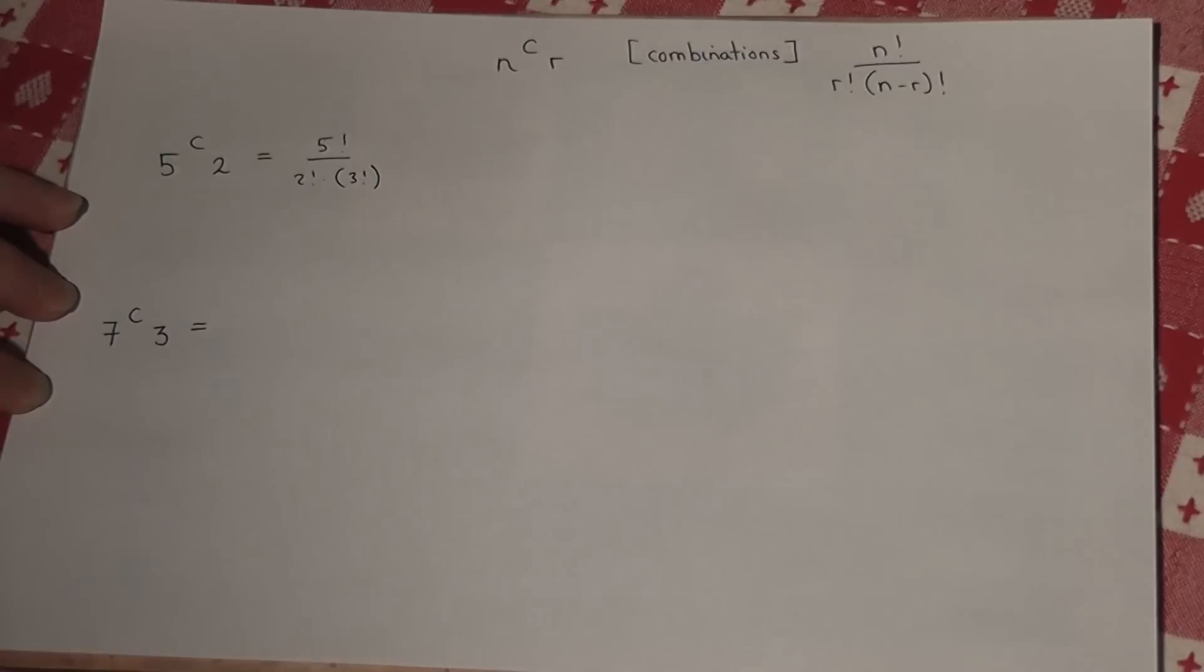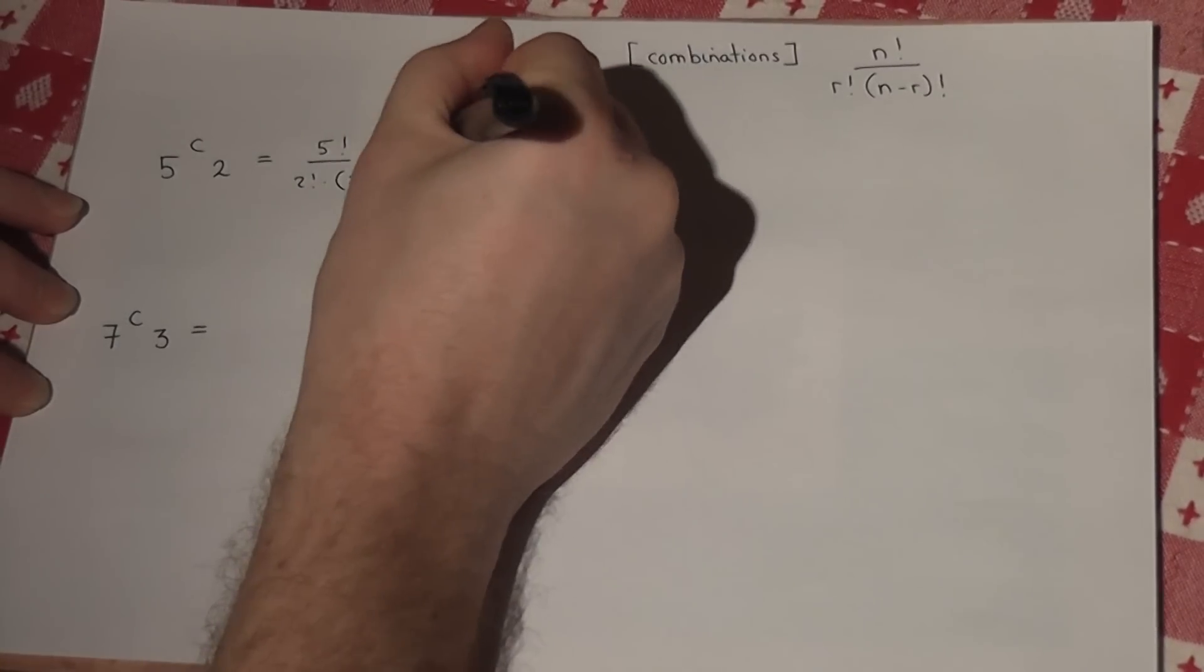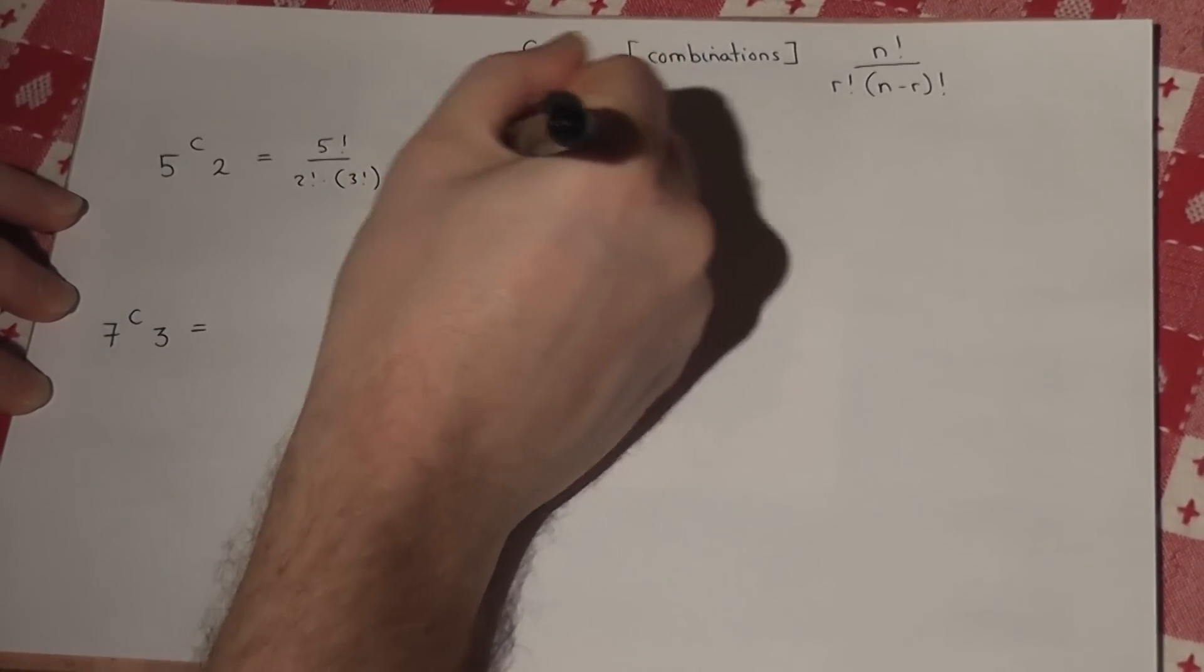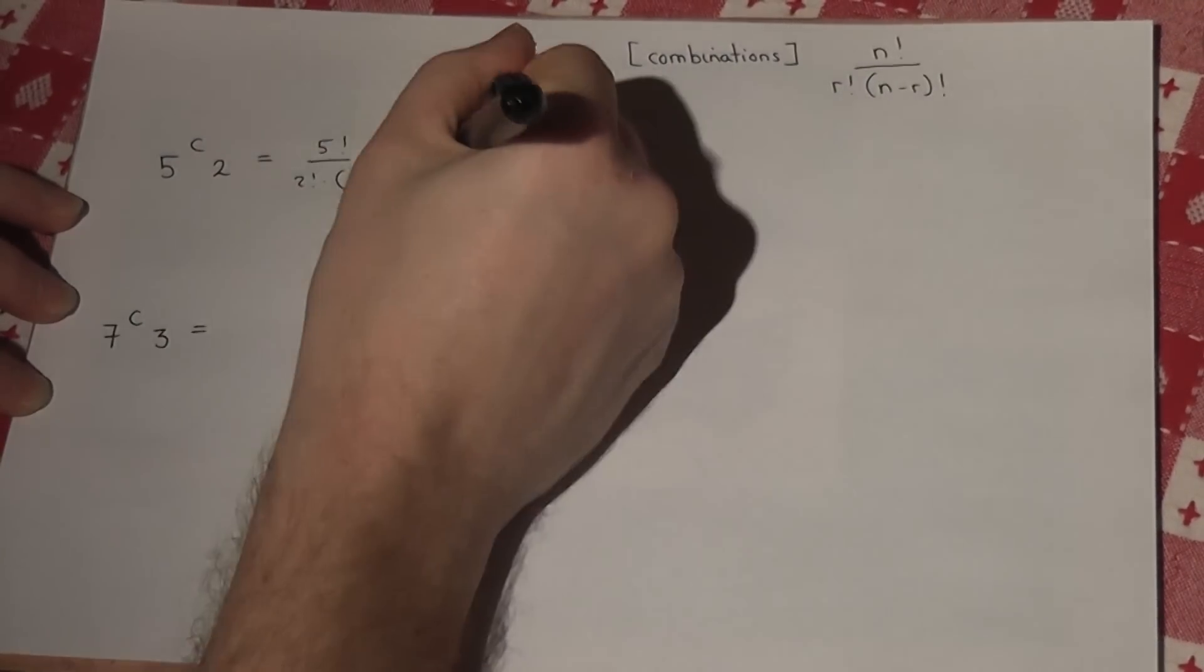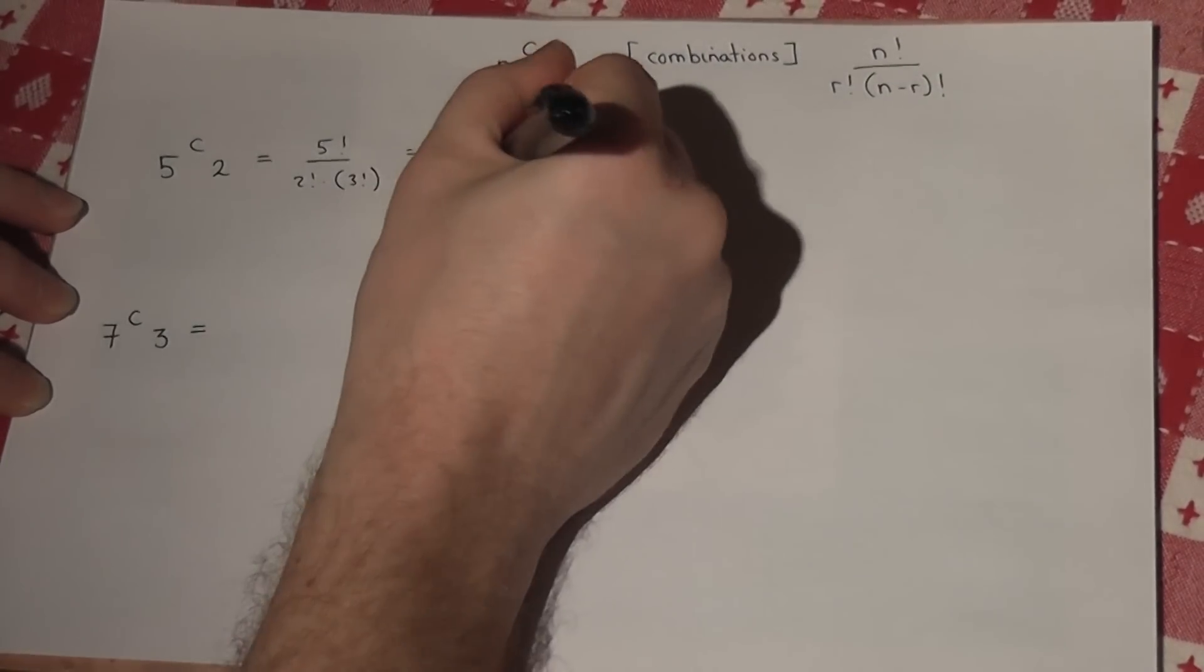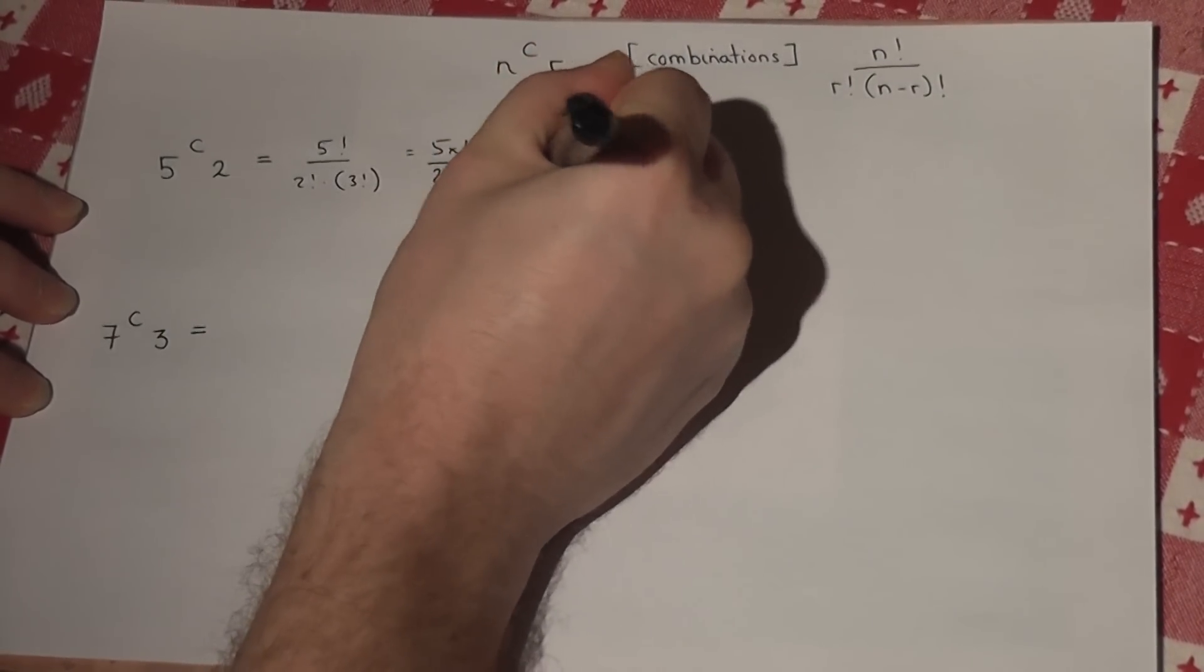Now 5 factorial just means 5 times 4 times 3 times 2 times 1. So 2 factorial means 2 times 1, and 3 factorial means 3 times 2 times 1.